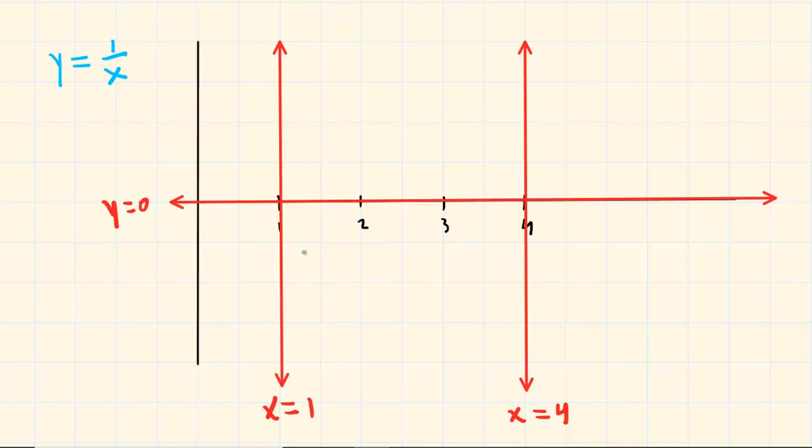For example, if we plug one in for x here, we would have one divided by one, which would give us a y value of one. So when x is equal to one, the y value is equal to one. We would have a point right here.